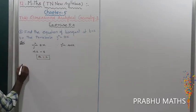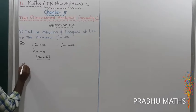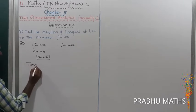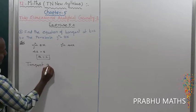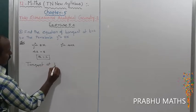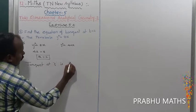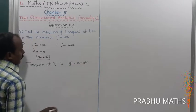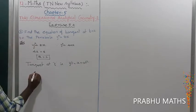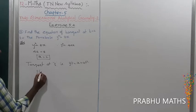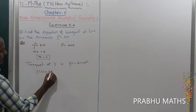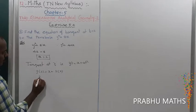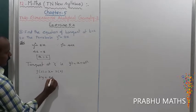The tangent at t: yt is equal to x plus at squared. That is the formula. So substituting t equal to 2: y into 2 is equal to x plus a value 2 into 2 squared, giving 2y is equal to x plus 4.